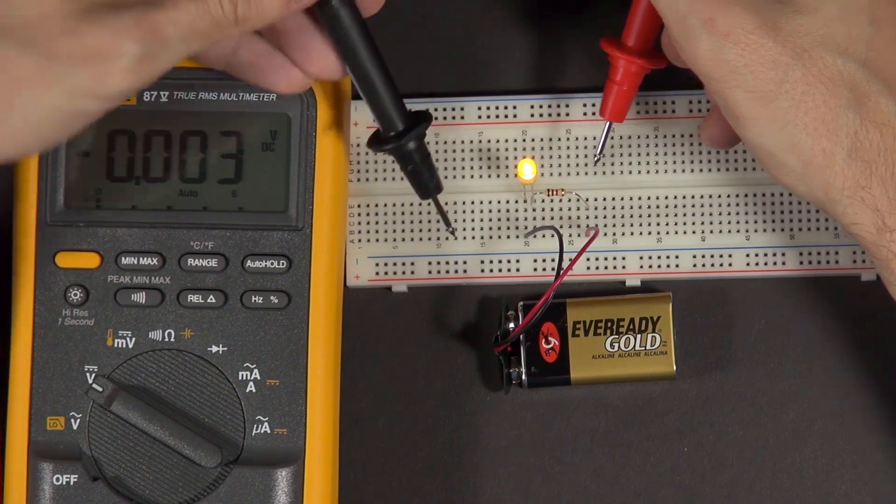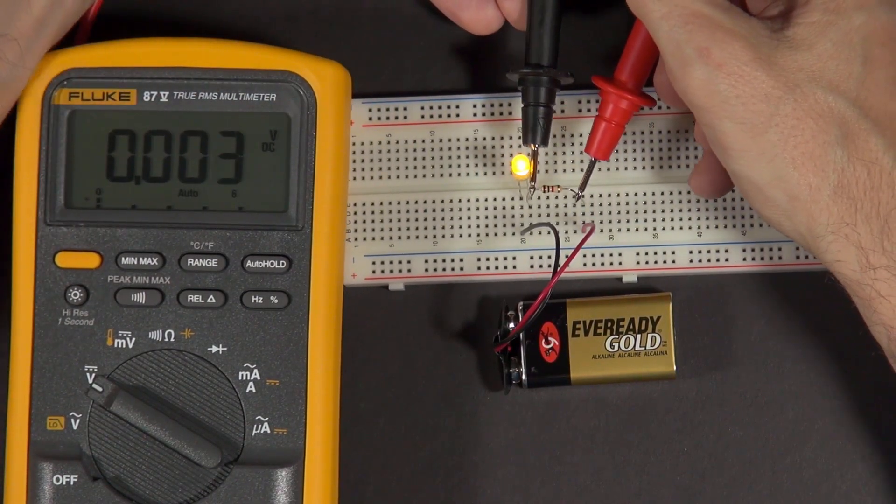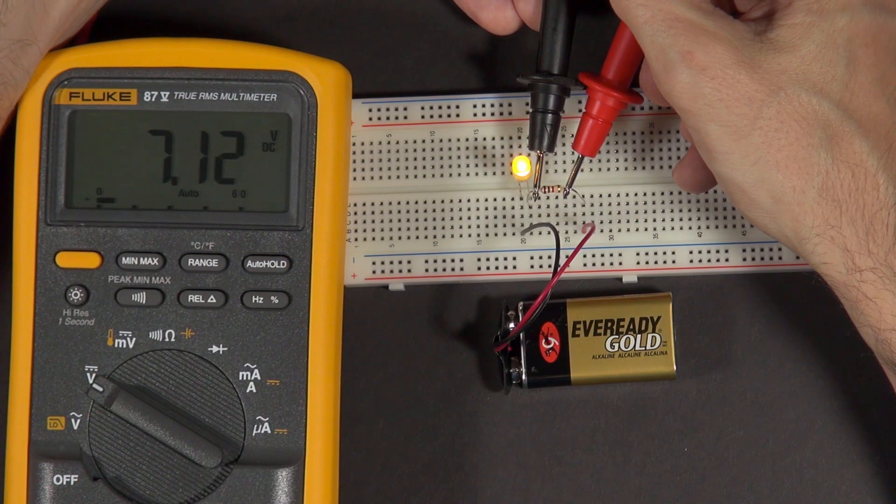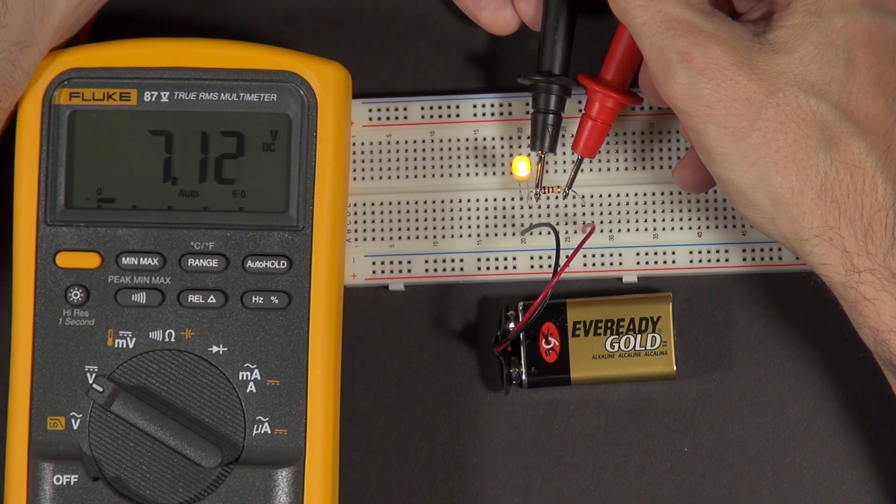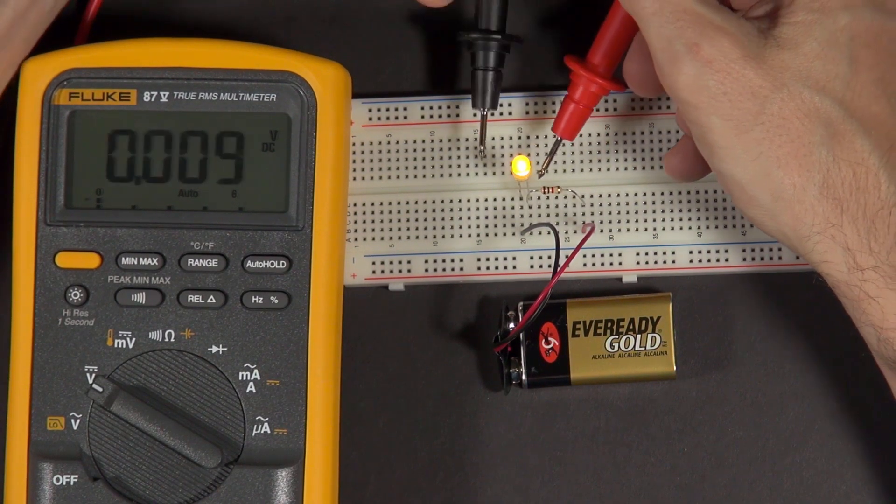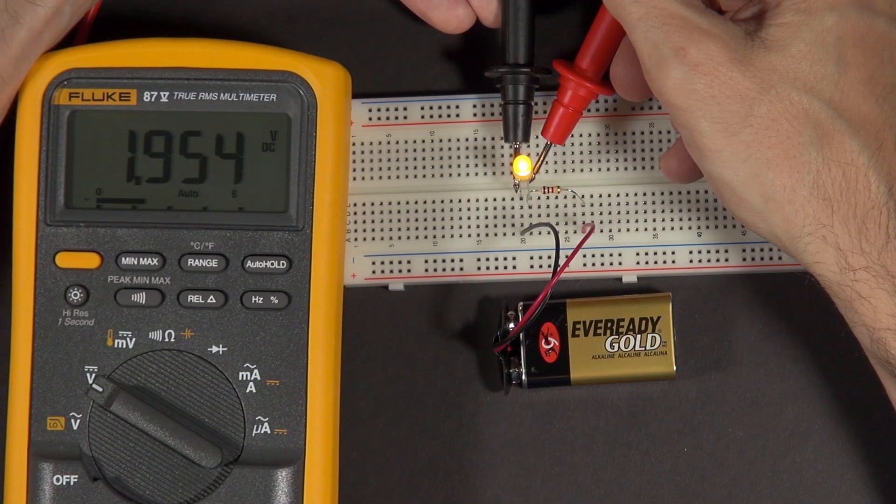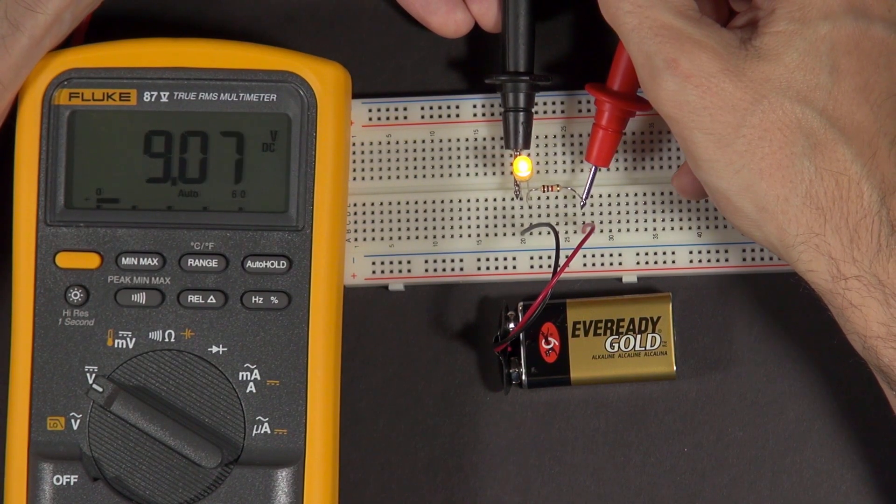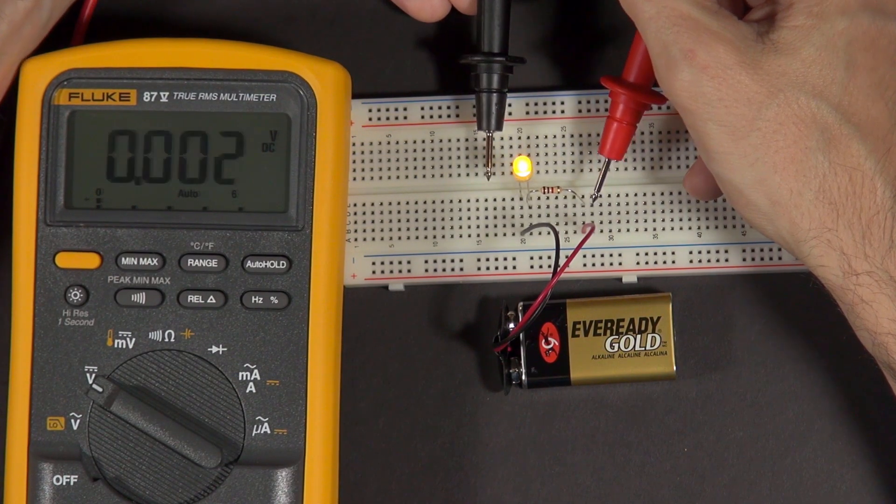One more thing I'll measure is the voltage on the resistor. From this side of the resistor to the other side, I see 7.12 volts, which makes sense. The resistor is dropping 7.1 volts, the LED is dropping 1.95 volts, and the battery is providing 9 volts.